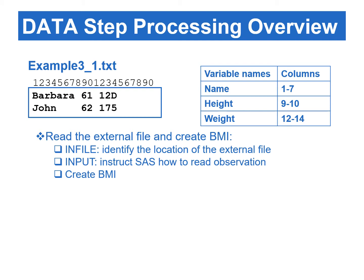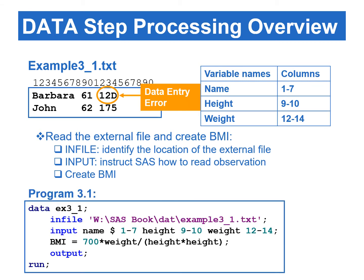Program 3.1 illustrates how data step processing works. This program reads raw data from a text file and creates one variable. The raw text file contains two observations and three variables. The weight variable for the first observation is entered as 12D, which is a data entry error. Each variable in the text file is in a fixed field, so we can use the column input method to read this data set. Program 3.1 starts with the INFILE statement, followed by the INPUT statement. The INFILE statement identifies the location of the external file, and the INPUT statement instructs SAS how to read each observation. Thus, we must place the INFILE statement before the INPUT statement, because SAS needs to know where to find the external file before it can read it. After that, we can calculate the BMI variable using the assignment statement.